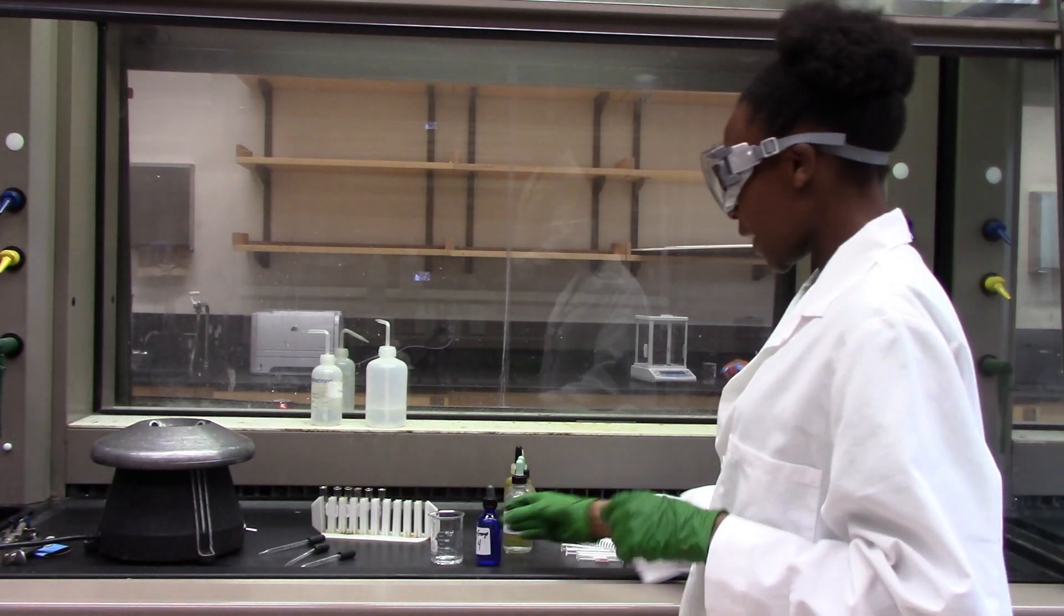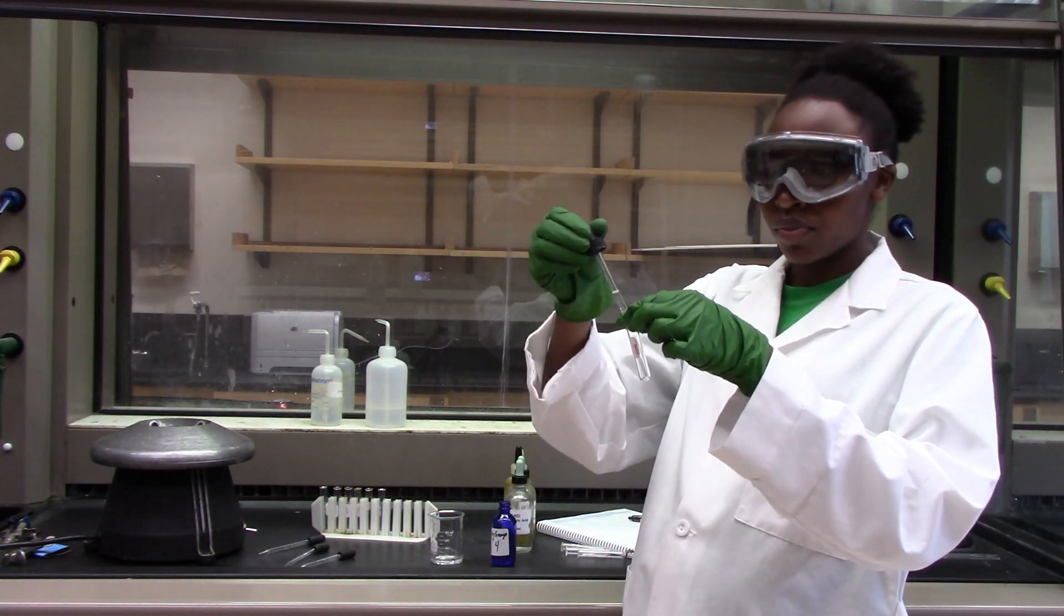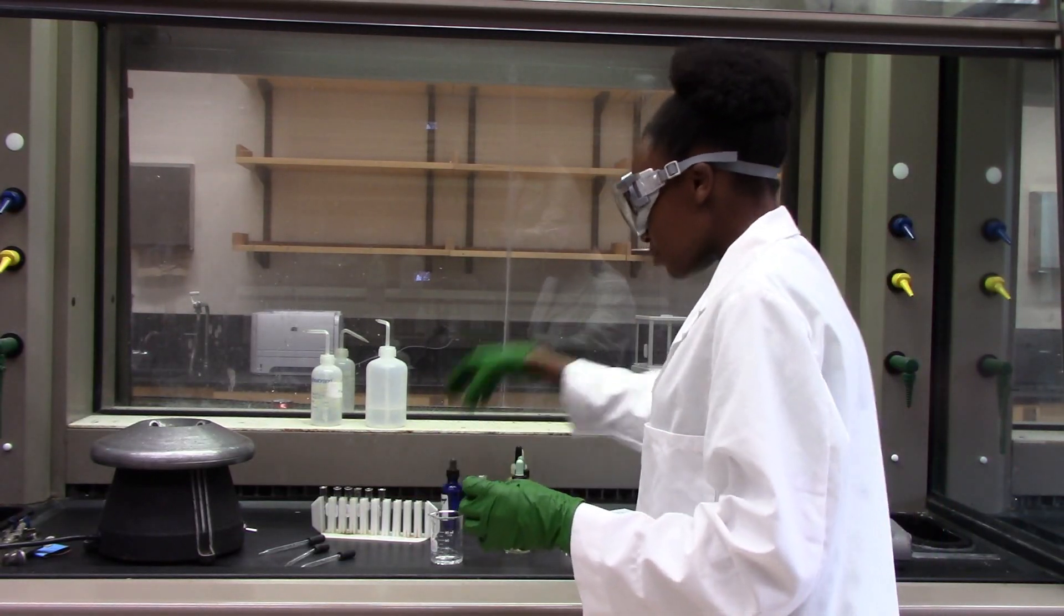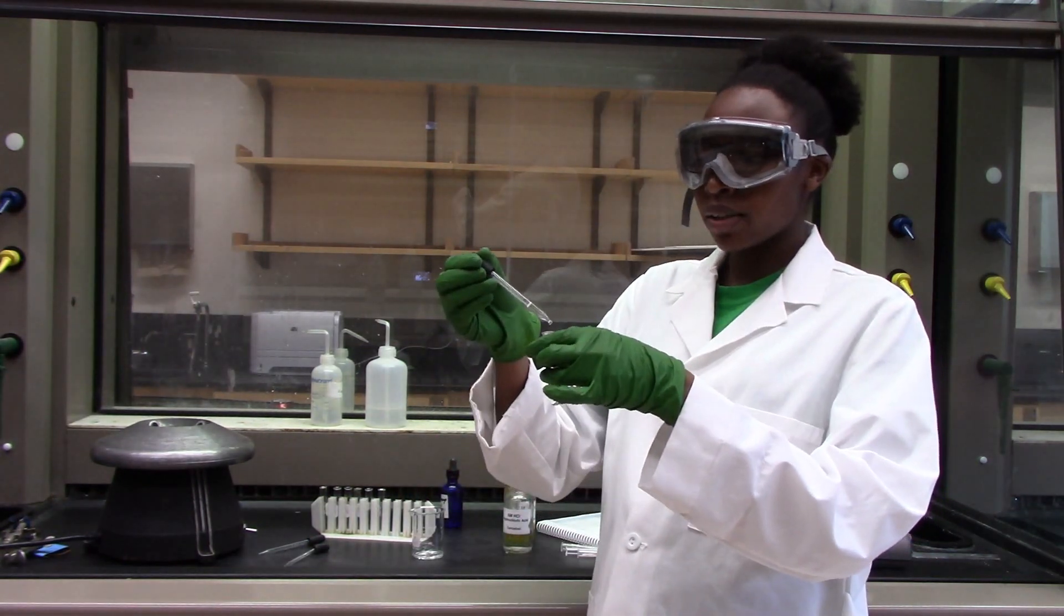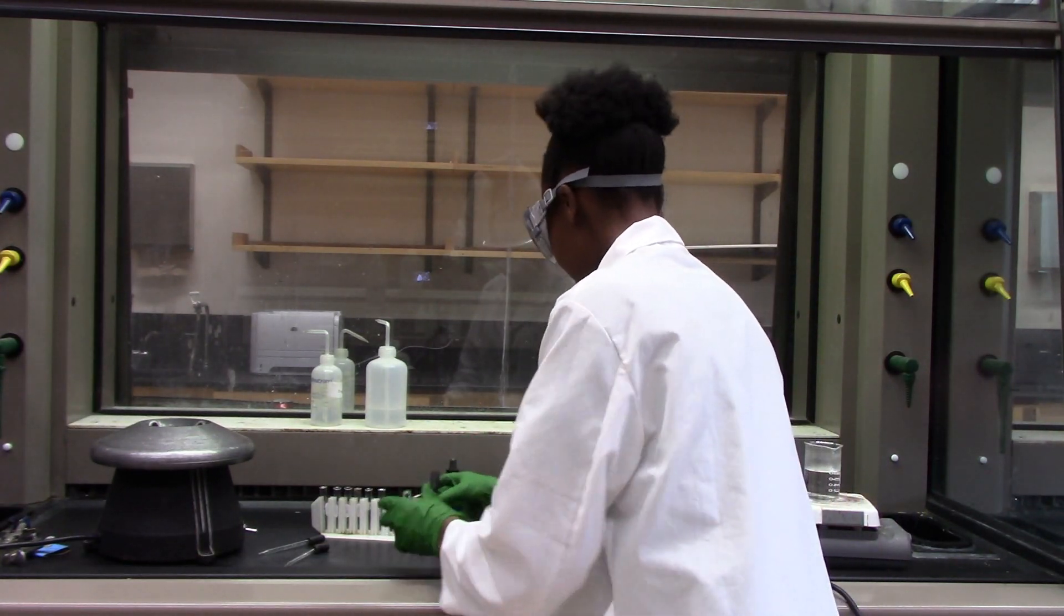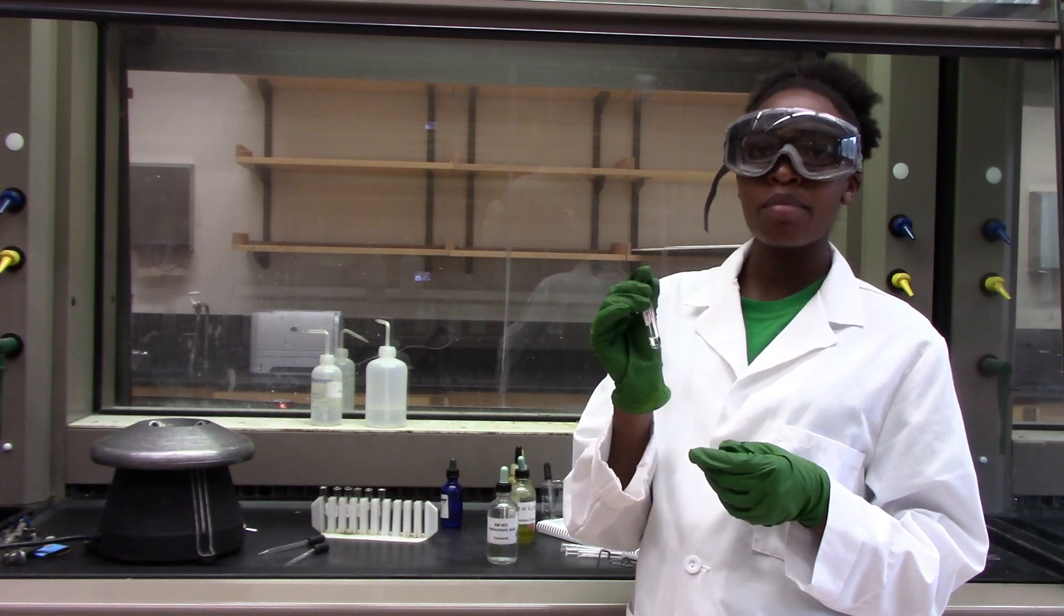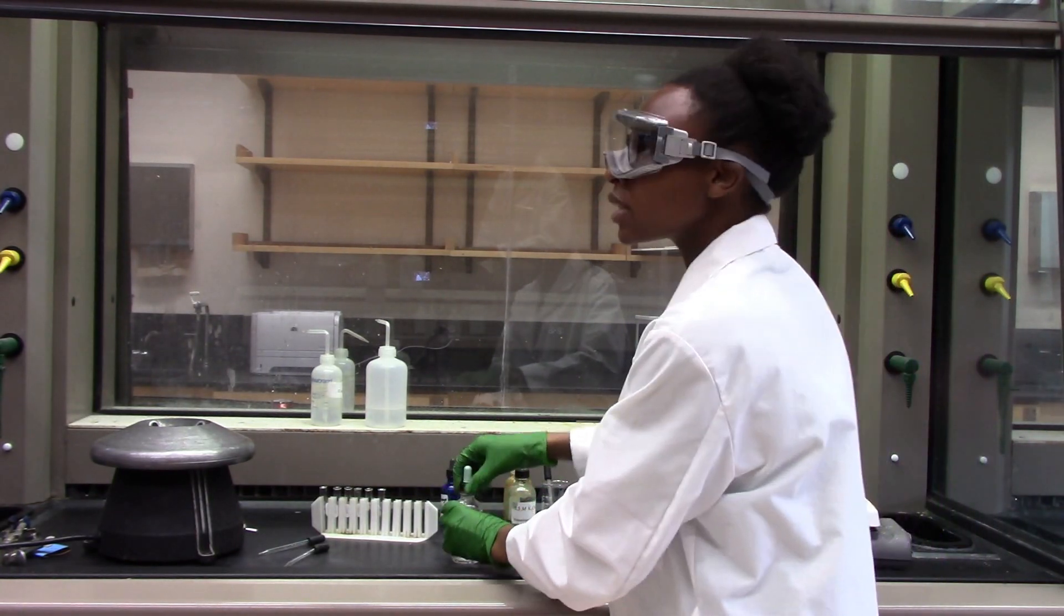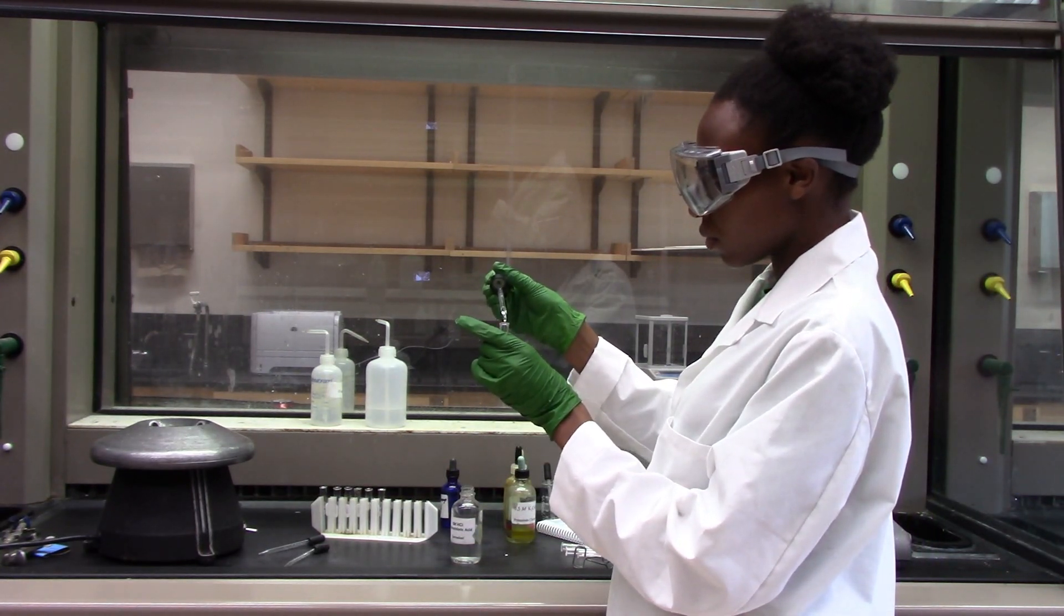We will get started by taking six drops of our unknown and putting it into the test tube. Once I have this, I am going to add about five drops of cold water, and this is the ionized water. Because silver group cations have insoluble chlorides, I am going to add six molar HCl. I am going to add two drops and mix it.